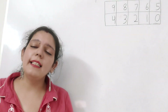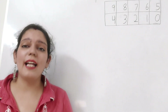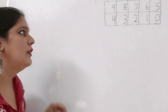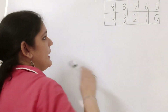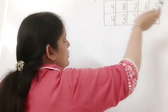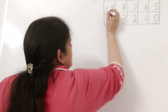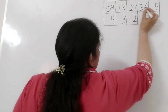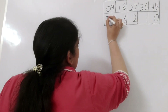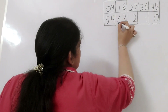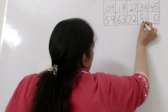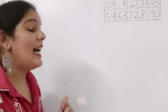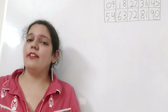Now what about the tens place? We will again write the digits from 0 to 9, but in the opposite manner — that is, where we have written 9 on the ones place we will write 0 on the tens place, then 1, 2, 3, 4, 5, 6, 7, 8 and 9. And yes, this is as simple as that and our 9 times table is ready.